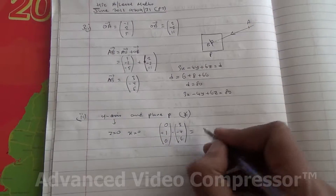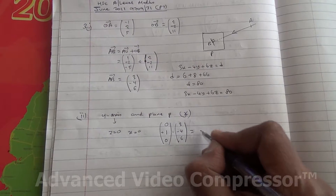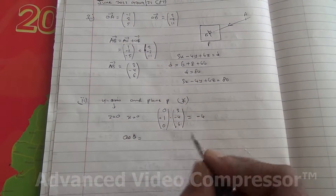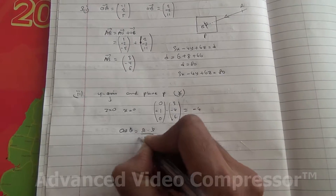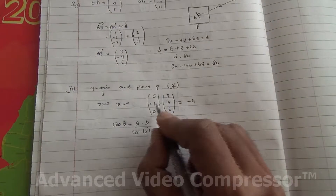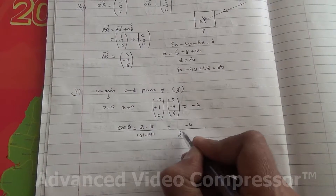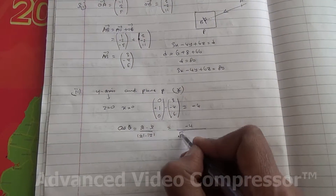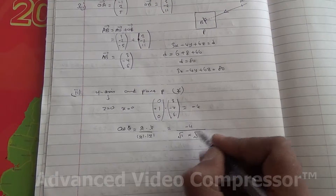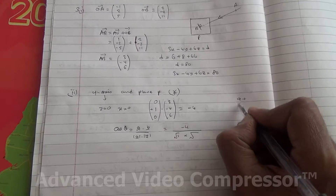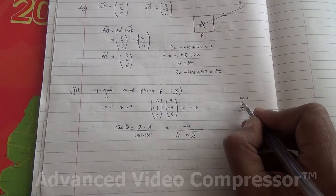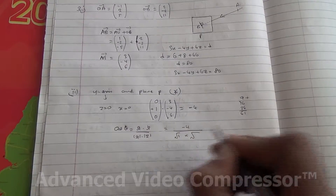When we compute the dot product: 0 times 3 is 0, 1 times minus 4 is minus 4, 0 times 6 is 0, giving minus 4. To find the angle between two vectors, cos theta equals A dot B divided by the magnitude of A times the magnitude of B. So we have minus 4 divided by the square root of 0 squared plus 1 squared plus 0 squared — which is 1 — times the square root of 9 plus 16 plus 36, which equals 61.